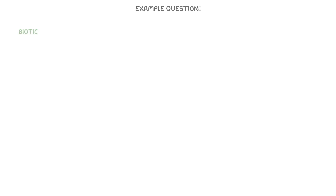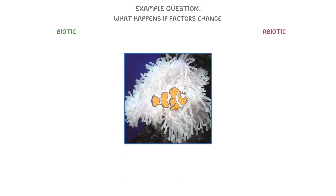Now, typical questions for this topic will generally focus around identifying these various biotic and abiotic factors, and then trying to explain what will happen if they change. So if you think about a clownfish chilling out by its sea anemone, what would be the main biotic and abiotic factors that affect it?